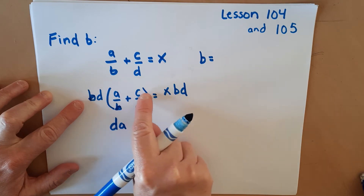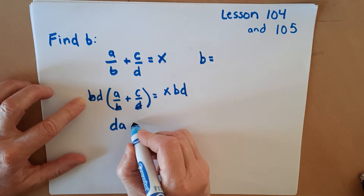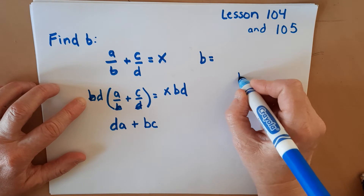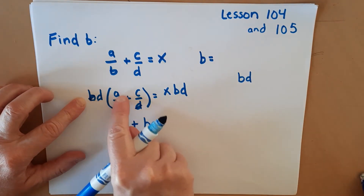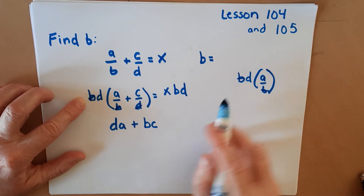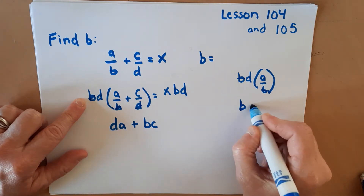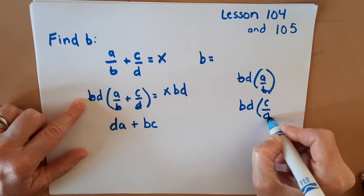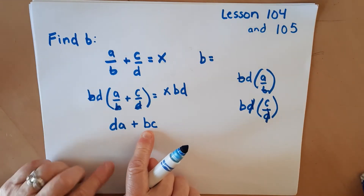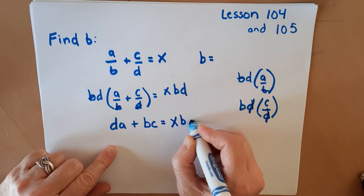Don't forget to multiply this side by B and D as well. When we do that, the B's cross off and we're left with just DA. When we do the distributive property, we need to multiply BD also times this fraction. In this fraction, the D's cross off, leaving us with just BC. So BD times A over B leaves DA, and BD times C over D leaves BC. And then the right side stays as XBD.